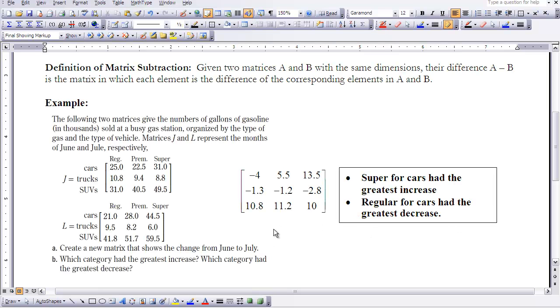Here you see the representation of the difference between the months of June and July. So here we had a decrease of 4, a decrease of 1.3, an increase of 10.8.